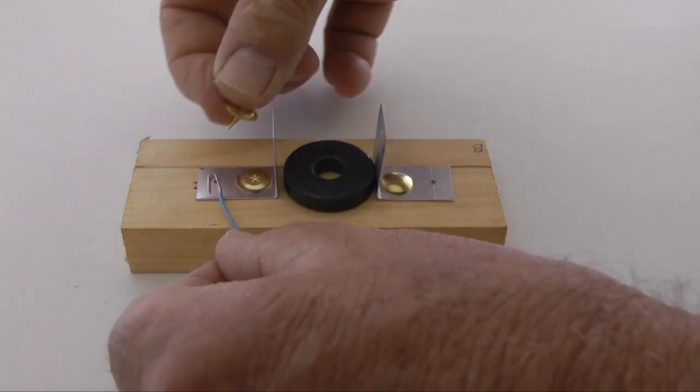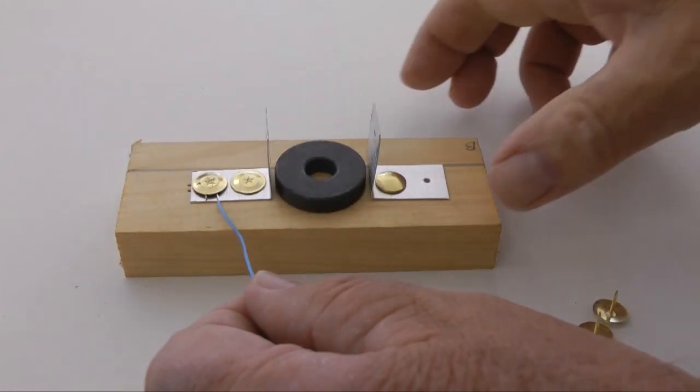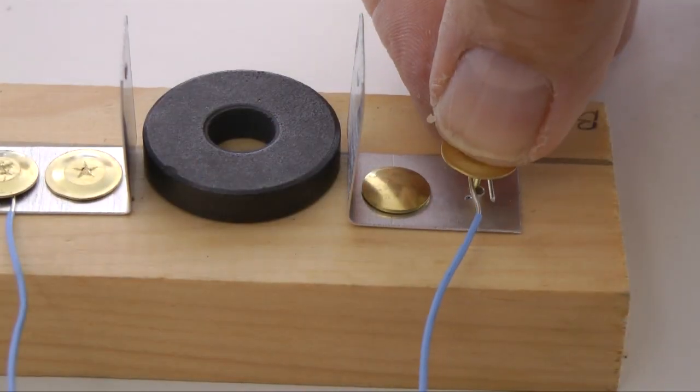Use the thumbtacks to secure a wire to each bracket. Make sure that you have a metal to metal connection. Electricity must flow through the wires to the bracket.